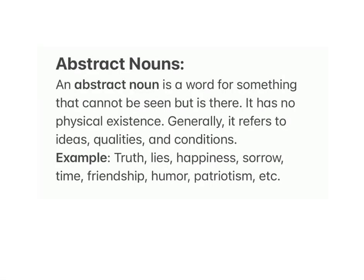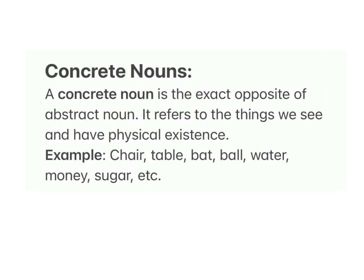Abstract nouns: An abstract noun is a word for something that cannot be seen but is there — it has no physical existence. Generally it refers to ideas, qualities and conditions. Examples: truth, lies, happiness, sorrow, time, friendship, humor, patriotism, etc. Concrete nouns: A concrete noun is the exact opposite of an abstract noun.